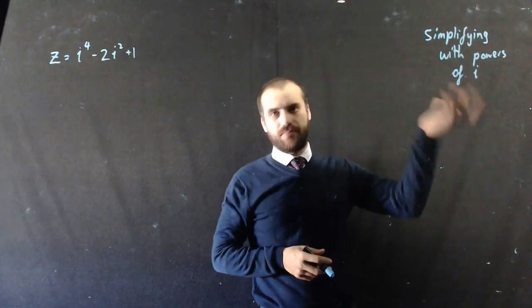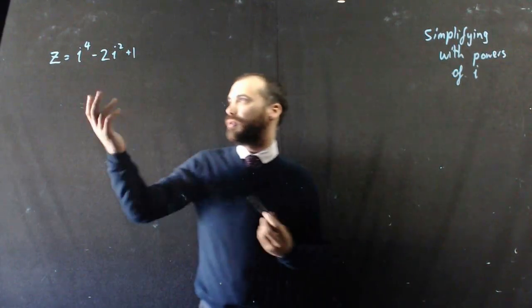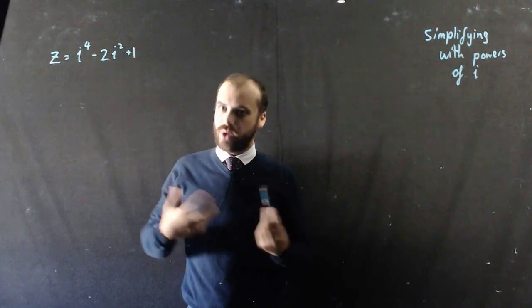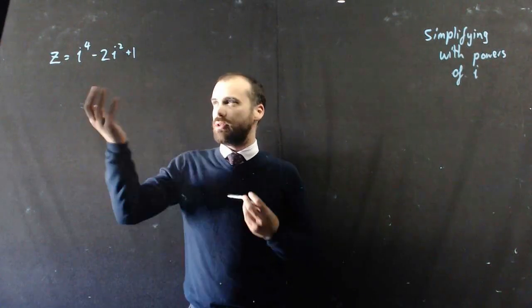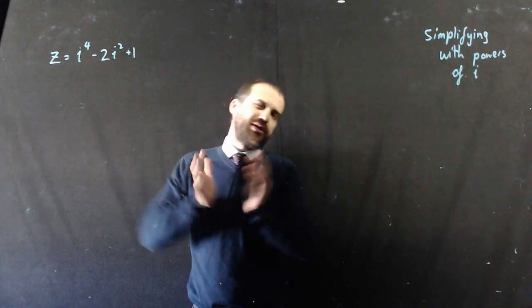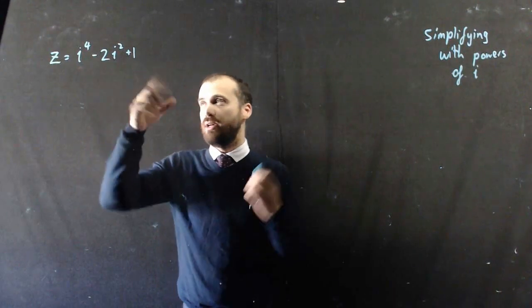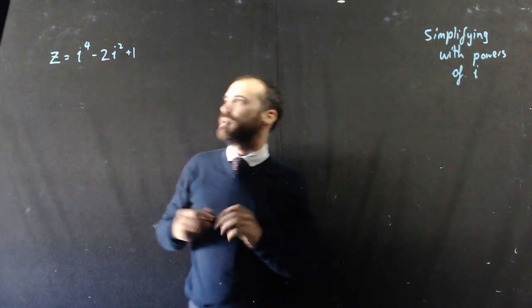So I'm just going to simplify a couple of things now with powers of i. So if I had a question like this, z equals i to the 4 minus 2i squared plus 1, I can start dealing with those powers and then putting the real and imaginary components together. At the moment I seem to have two imaginary components and a real component. Let's see what happens once I deal with these powers.